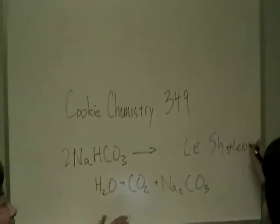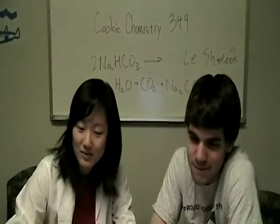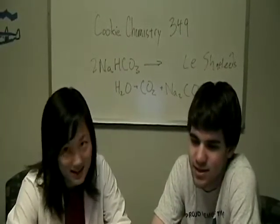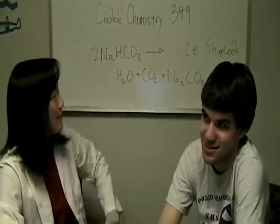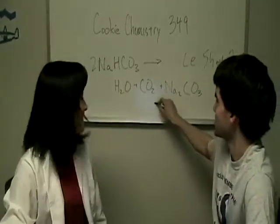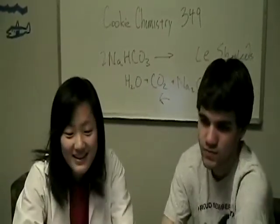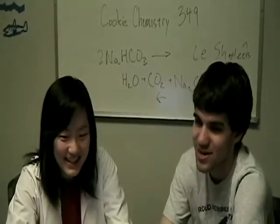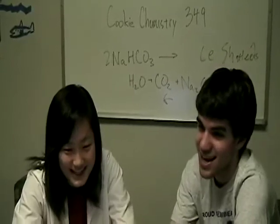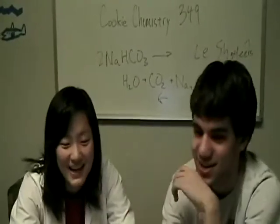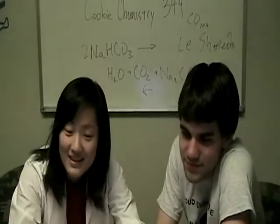Le Chatelier's Principle: the salt, NaCl, slows down this reaction by making the equation shift to the left. The alkalinity of baking soda — a measure of the ability of a solution to neutralize acids to the equivalence point of carbonate or bicarbonate — lowers the caramelization point of sugar in the cookie dough, causing faster and darker coloring of the crust.